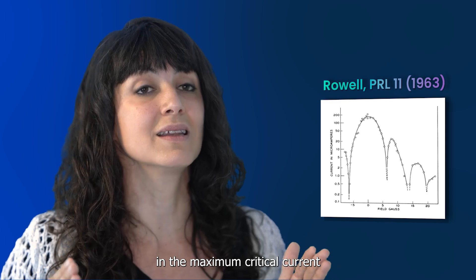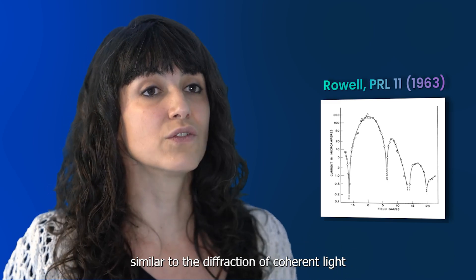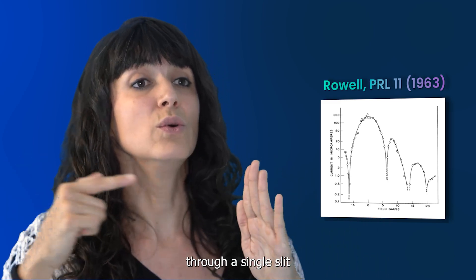By directing a varying magnetic field, he observed a Fraunhofer diffraction pattern in the maximum critical current, similar to the diffraction of coherent light through a single slit.